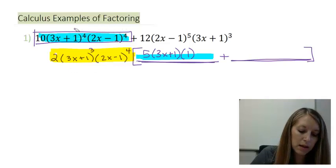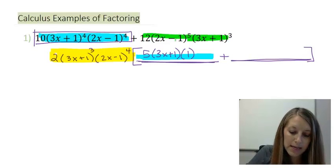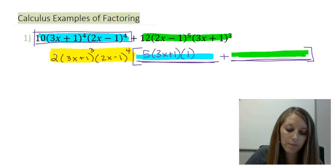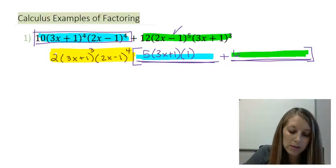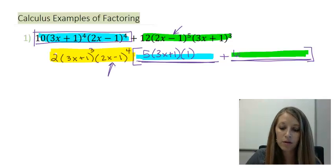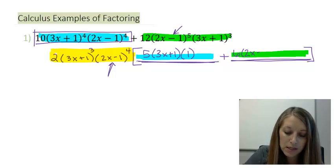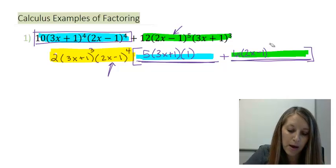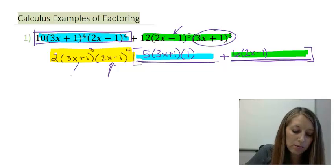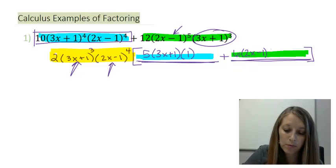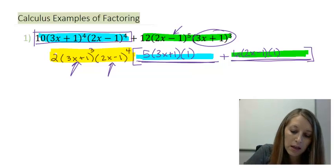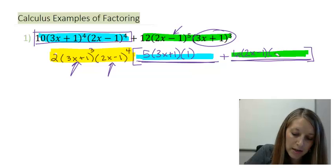Now let's do the same thing with my second term. I divide it by my greatest common factor. So 12 divided by 2 gives me 6. For 2x minus 1 to the 5th divided by 2x minus 1 to the 4th, 5 minus 4 is 1, so I'm left with 2x minus 1 to the 1st — I won't write that first power. In my second set of parentheses, 3x plus 1 cubed divided by 3x plus 1 cubed leaves me with 1, but most of the time we don't write that 1.